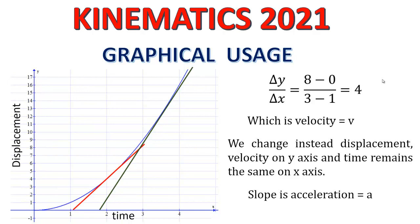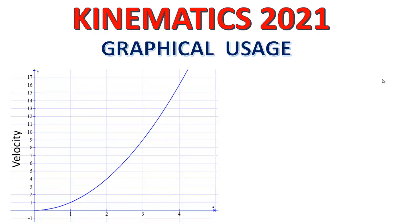If the line is constant on a velocity versus time graph, it represents uniformly accelerated motion. If it is a displacement versus time graph and the line is straight, it represents uniform velocity. For the velocity versus time graph, the slope gives acceleration. The area under the curve — say from 2 seconds to 4 seconds — represents velocity times time, which is displacement.